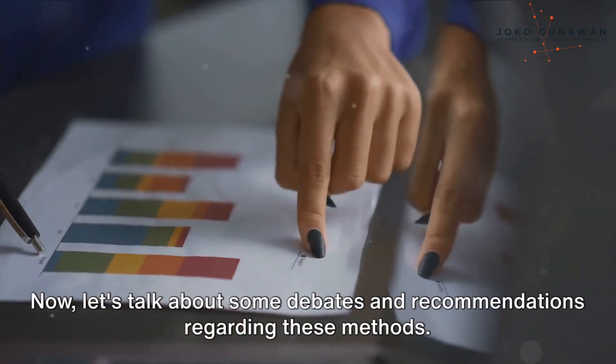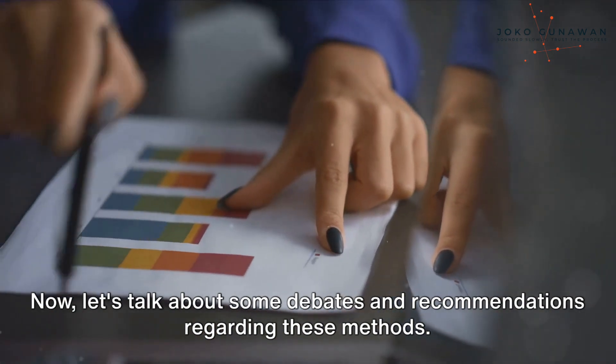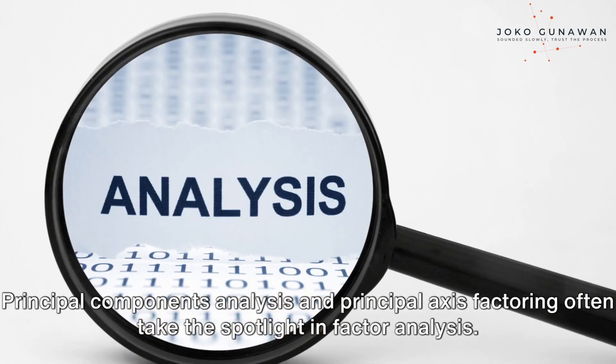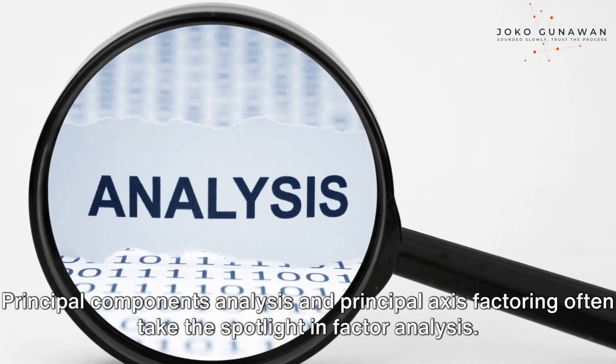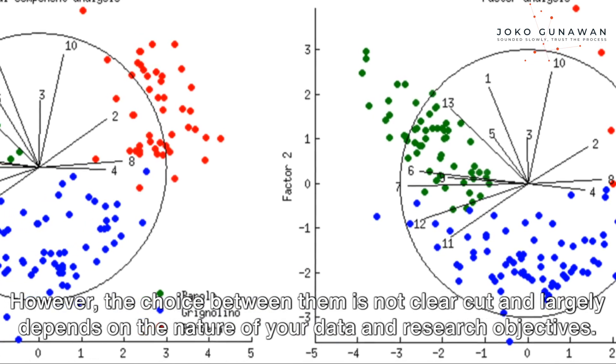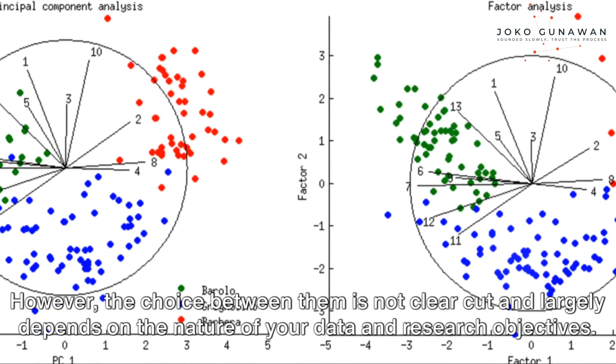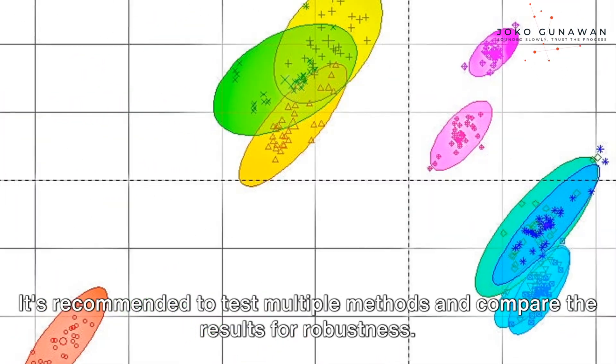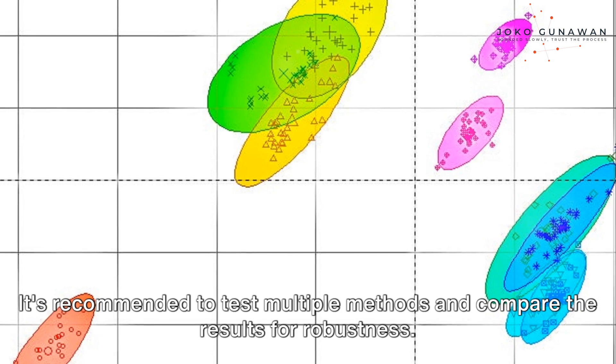Now, let's talk about some debates and recommendations regarding these methods. Principal components analysis and principal axis factoring often take the spotlight in factor analysis. However, the choice between them is not clear-cut and largely depends on the nature of your data and research objectives. It's recommended to test multiple methods and compare the results for robustness.